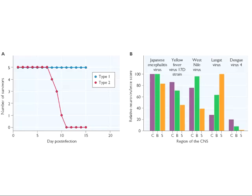Here are two examples of measuring virulence. On the left is a graph of survivors after infecting mice with two different strains of poliovirus. Type 1 strain — mice are all living up to 15 days; type 2 strain — mice are all dead by 15 days. That's a crude measure of virulence. On the right, we're measuring lesions in the central nervous system of an experimental animal across three regions — the cerebrum, brainstem, and spinal cord — for five different viruses. Very few lesions with dengue, many lesions with Japanese encephalitis virus.